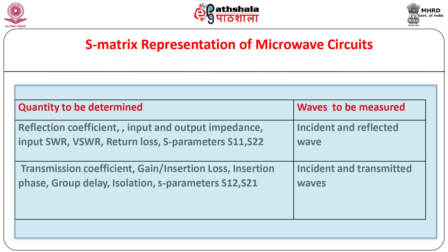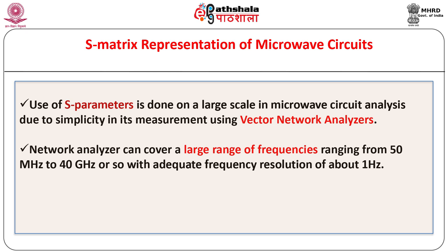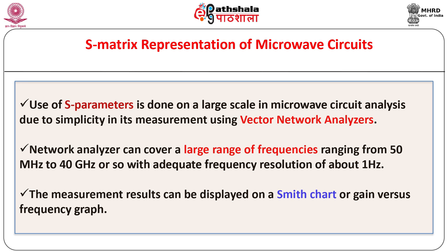Association of various physical quantities with the waves to be measured at the input and output ports is as shown. Nowadays use of S parameters is done on a large scale in microwave circuit analysis due to simplicity in its measurement using a vector network analyzer. The term vector implies the measurement of amplitude and phase of the quantity. A network analyzer can cover a large range of frequencies ranging from 50 MHz to 40 GHz or so, with adequate frequency resolution of about 1 Hz, and the measurement results can be displayed on a Smith chart or gain versus frequency graph.